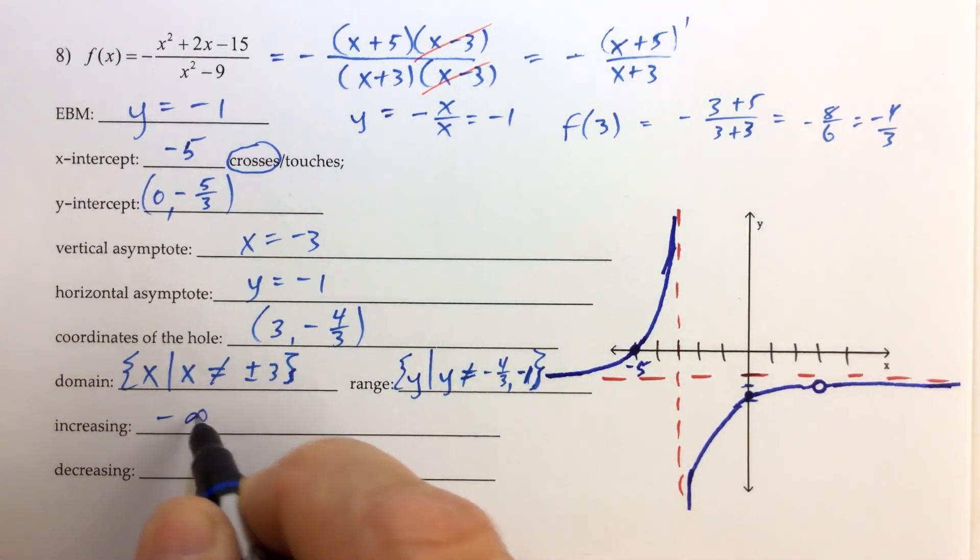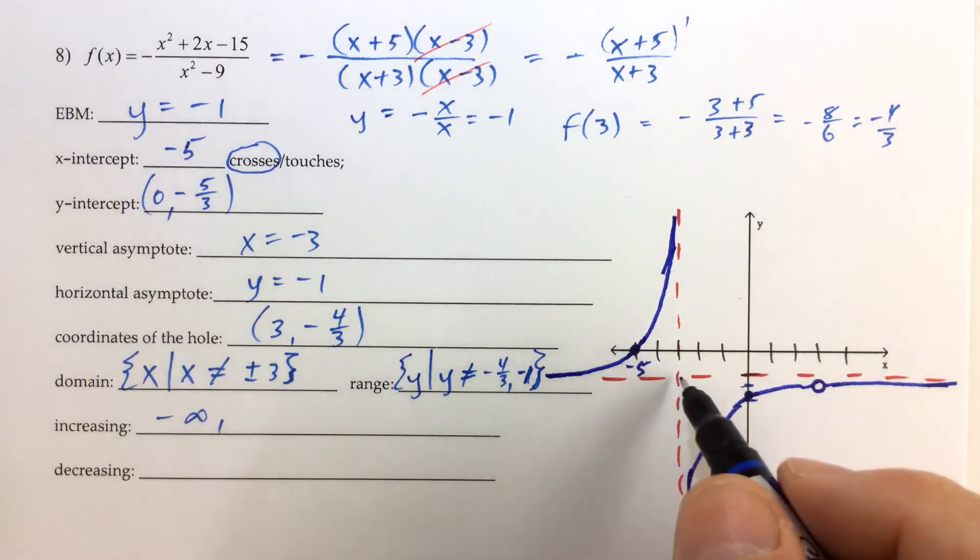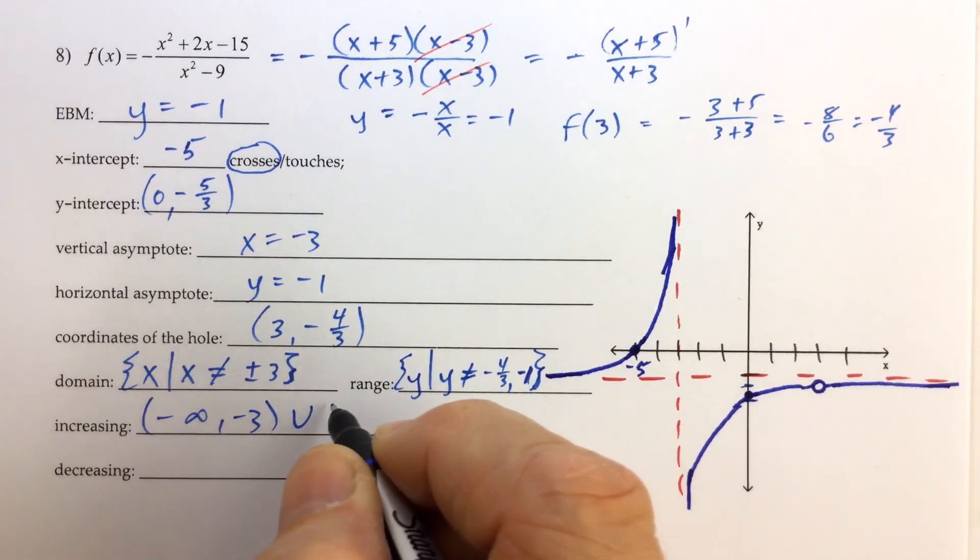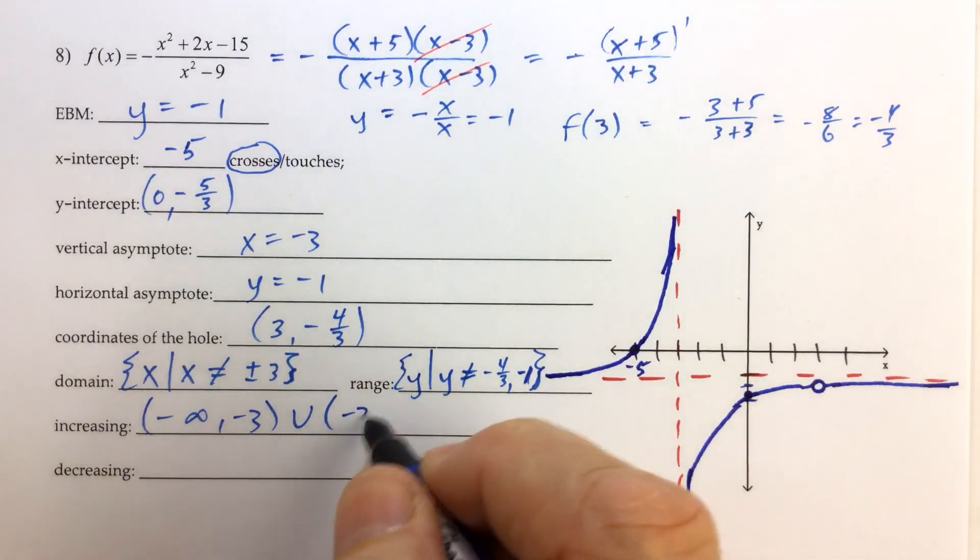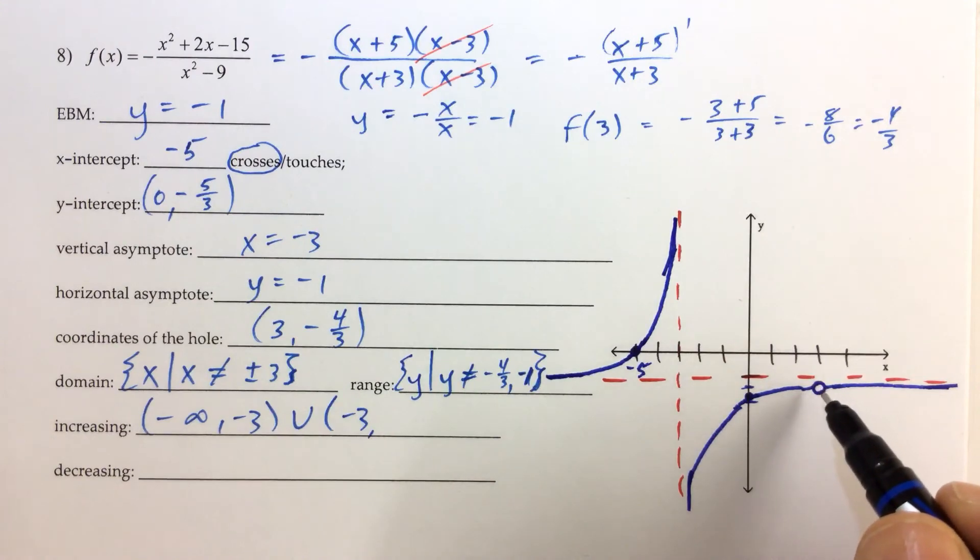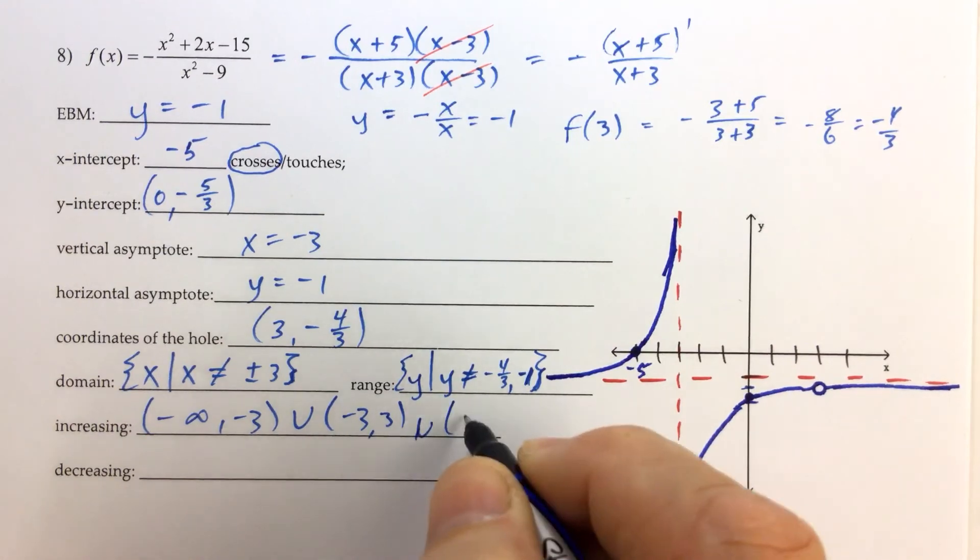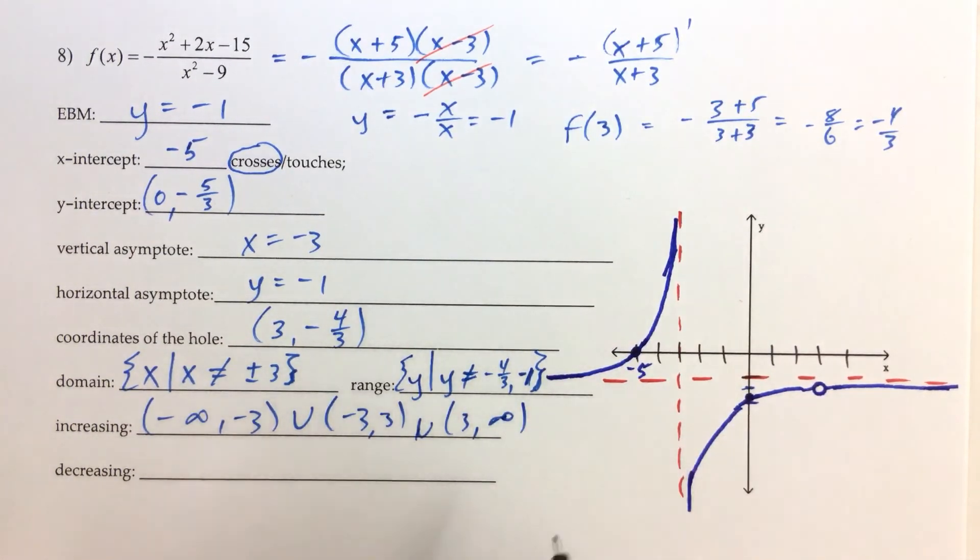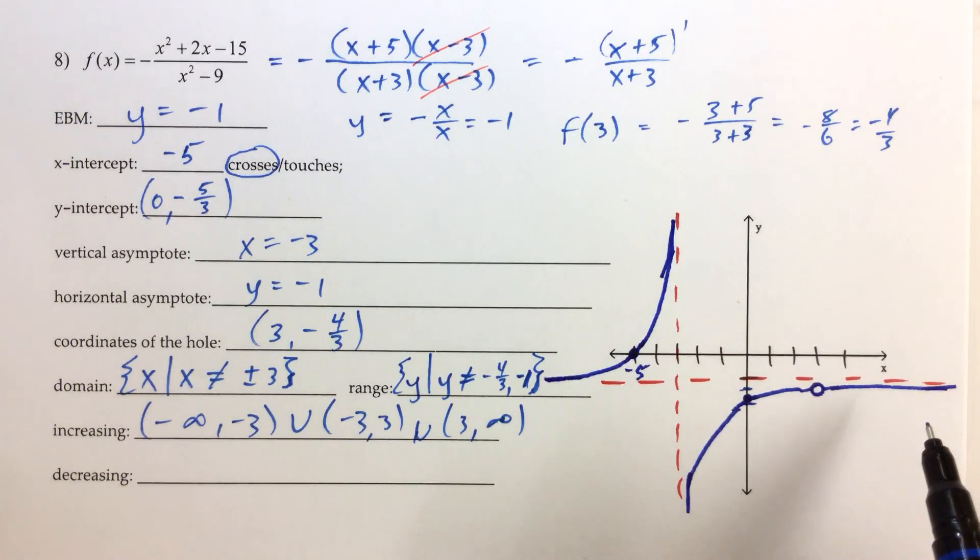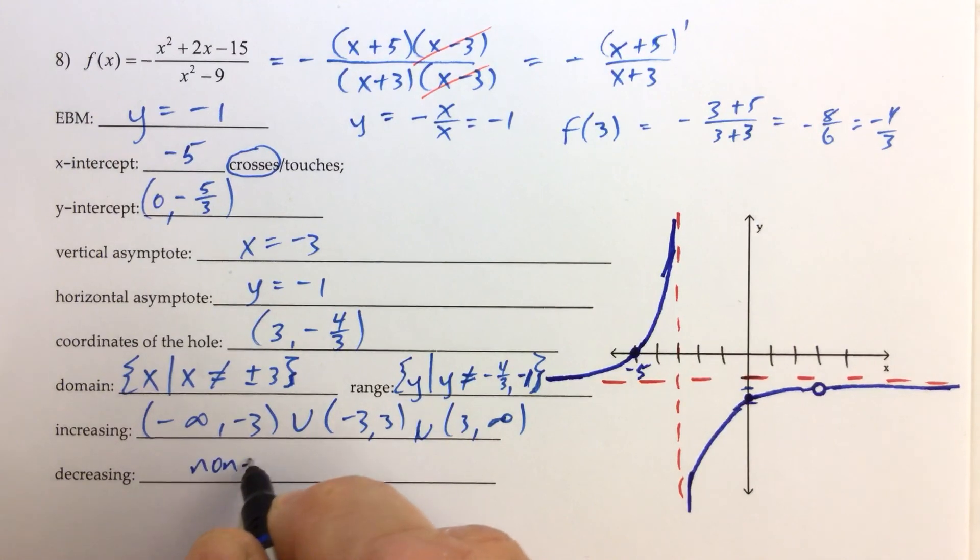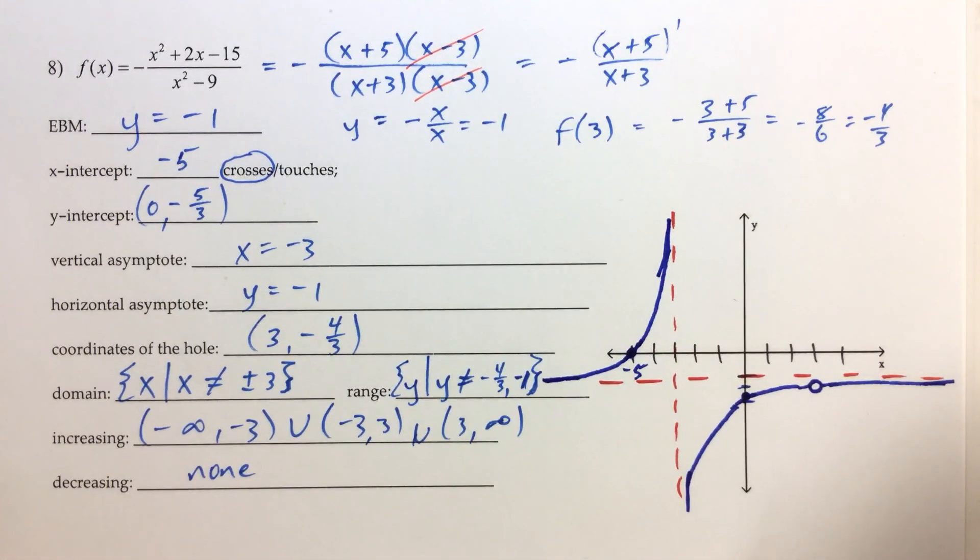Increasing we see from negative infinity all the way to negative 5, sorry, no, that's not right, all the way to negative 3. Combined with from negative 3 all the way to, we could say it's increasing all the way to positive 3 and then all the way from positive 3 to infinity. So basically the function is increasing over its entire domain. The domain we're leaving out negative 3 and positive 3 is increasing over the entire part of the domain, decreasing nowhere, and that is it.